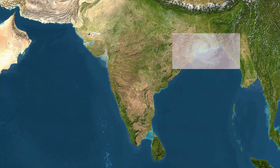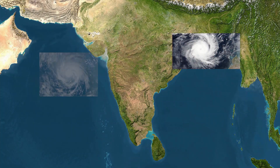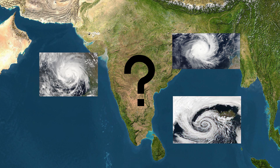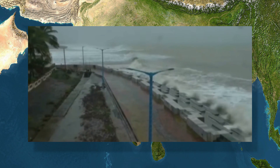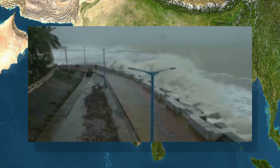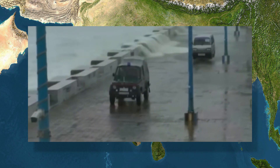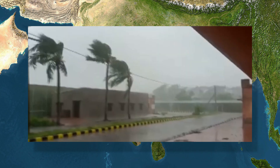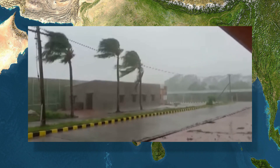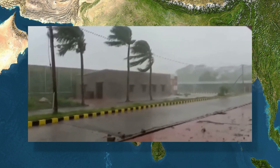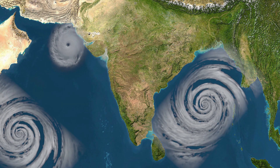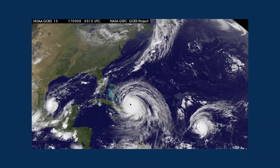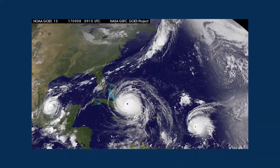Kabhi kabhi India mein aaye cyclone ko padosi desh se naam diya jaata hai. Darsal cyclone ko naam dena bahut important hai. Iske wajah se emergency mein communicate karna aasaan ho jaata hai. Media ke liye public ko samjhaane mein madad milti hai, aur naam dene se bahut saare confusion dur hote hain, kyunki tropical region mein ek se zyada cyclone ho sakti hain.